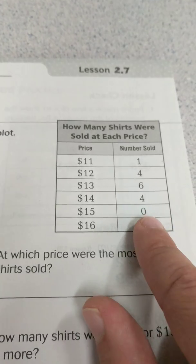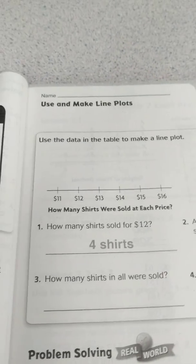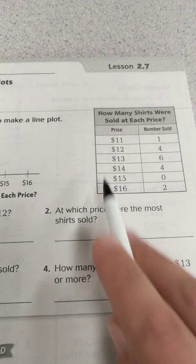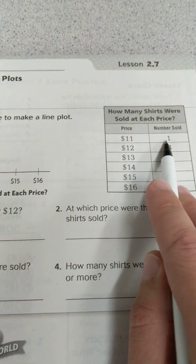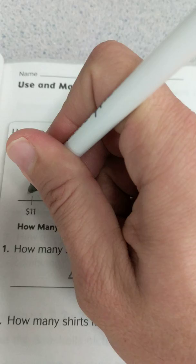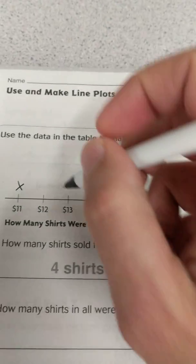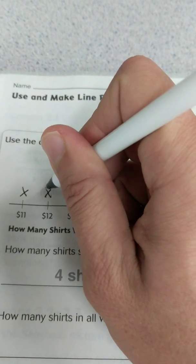So what we're going to do is we're going to transfer this information and bring it over to this line plot over here. So I see for $11 there's one sold, so I'm going to put 1 X here. And then for $12, 4, so 4 X's.